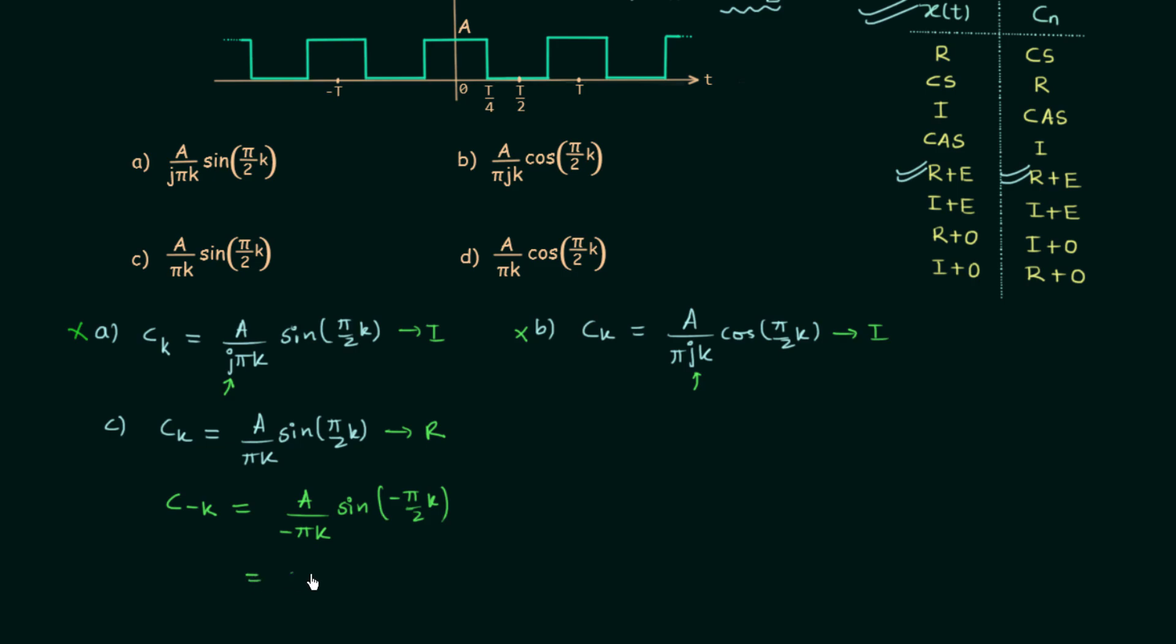Now we have minus A over pi*K. Sin(-theta) is equal to minus sin(theta). Therefore sin(-pi/2*K) is equal to minus sin(pi/2*K). Minus and minus will become plus. And we are having A over pi*K sin(pi/2*K). This is the value of C(-K) and you can see it is same as the value of CK.